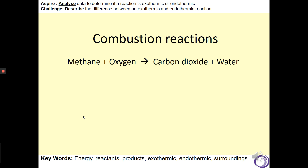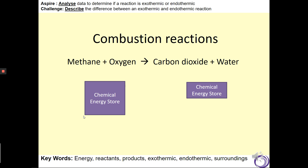Let's look at combustion in more detail. So methane, which is the gas that you use in your home for cooking, reacts with oxygen, which is needed for all combustion reactions. Before the chemical reaction takes place, the combined chemical energy store is greater than the energy store for the products. So we need to transfer some of the chemical energy into thermal energy. When this is transferred to thermal energy, we will see heat transferred to the surroundings and we would observe an increase in temperature. This heat is what you might use to cook your dinner.